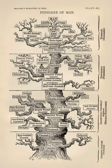When cells divide, their full genome is copied and each daughter cell inherits one copy. This process, called mitosis, is the simplest form of reproduction and is the basis for asexual reproduction. Asexual reproduction can also occur in multicellular organisms, producing offspring that inherit their genome from a single parent. Offspring that are genetically identical to their parents are called clones.